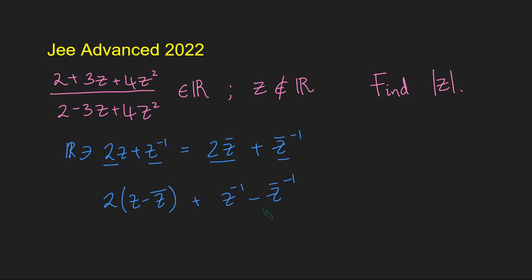And now I can do a little bit of simplification here. If I write this in fraction form, it might be a bit easier to spot. So let's write this as 1 over z minus 1 over z bar. Now I'm just going to cross multiply here. This all equals 0. 2 lots of z minus z bar plus z bar minus z all over the modulus of z squared equals 0. And now we can factor out a z minus z bar. And so we get z minus z bar multiplied by 2 minus 1 over the modulus of z squared equals 0.